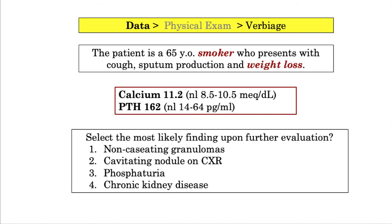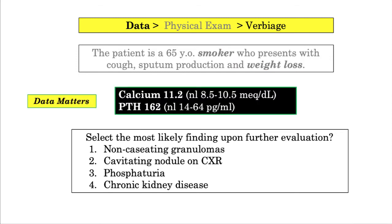To avoid them, you have to be aware they exist. So the trap is set, and here come the options. They are all associated with either high serum calcium or elevated PTH. They are all tempting, but if we keep our focus on the data and our initial correct diagnosis, then no matter how deceitful the verbiage might be, the correct answer will carry the day. And in this example, choice three, phosphaturia, would be the correct answer in spite of the question writer's musings.